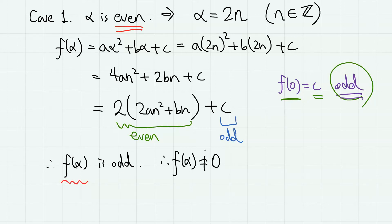Thus, it cannot be 0. But since we let alpha as an integer root of the equation f(x) equals 0, we have contradiction.